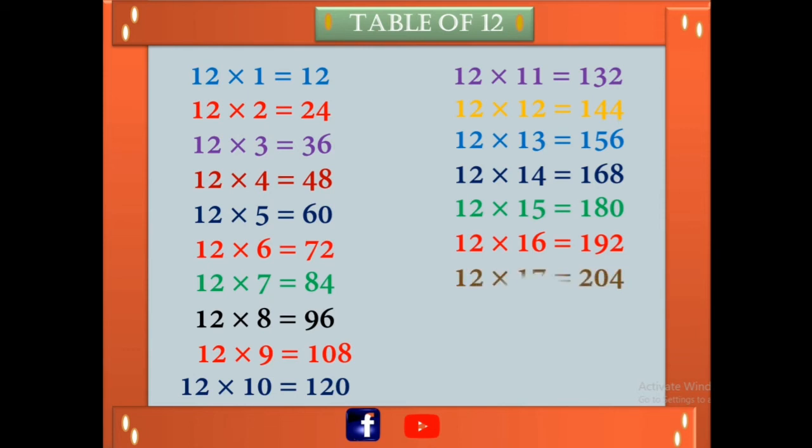12 times 17 is 204. 12 times 18 is 216. 12 times 19 is 228.